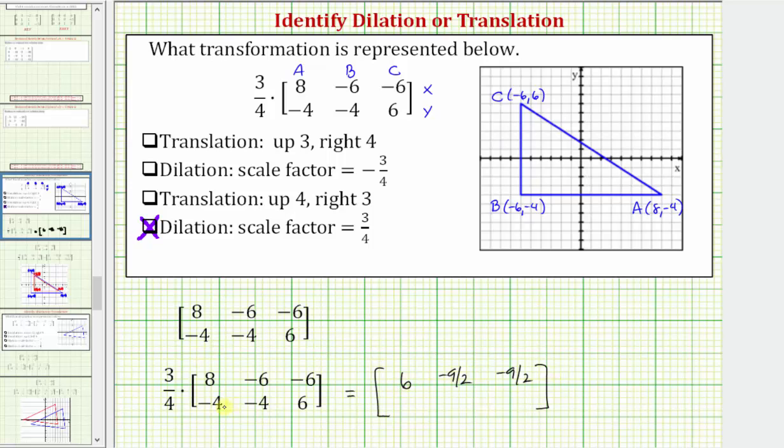For the second row, we have three-fourths times negative four, that's negative three. Three-fourths times negative four again. And three-fourths times six, which equals nine-halves. So these would be the vertices of the dilation of this blue triangle with a scale factor of three-fourths.